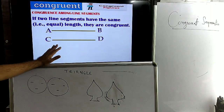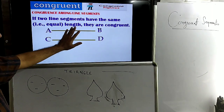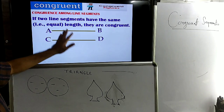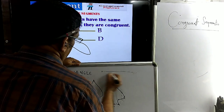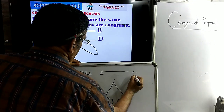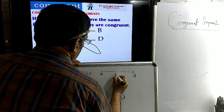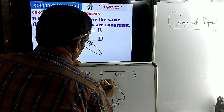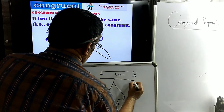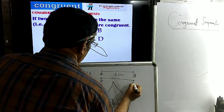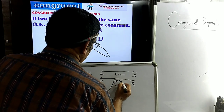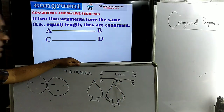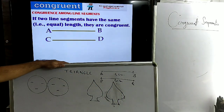Two line segments are said to be congruent if they have the same length. Suppose this is AB of 4 cm, and another line segment PQ is also 4 cm. Then AB and PQ are congruent to each other.